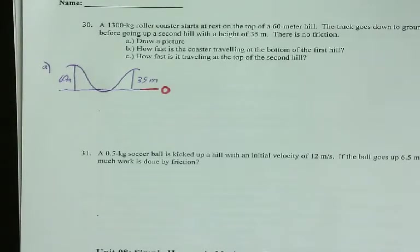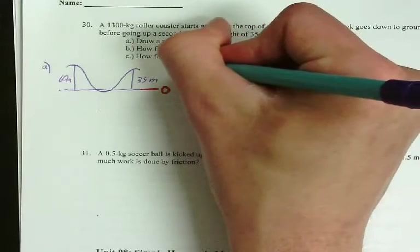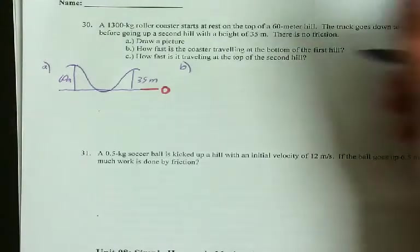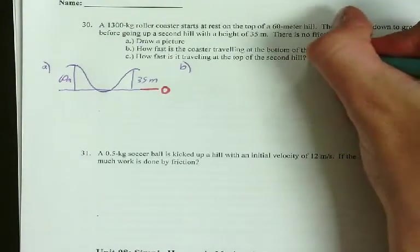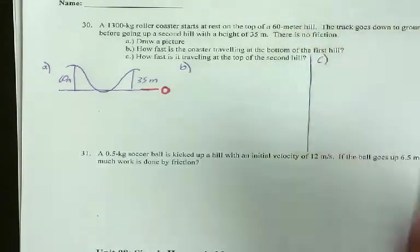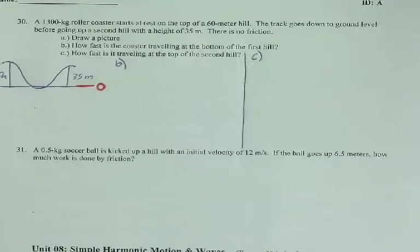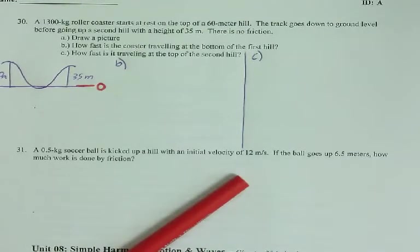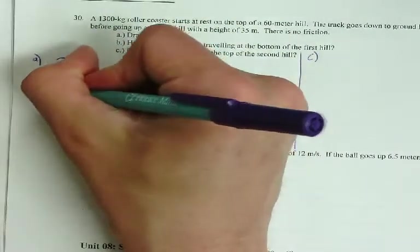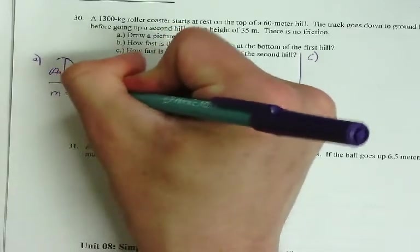So now we're ready for B. How fast is the coaster going at the bottom of the first hill? And then C, how fast is it going at the top of the second hill? Let's do B here, and then I'll do C over here. So I need to decide what type of problem this is. Let's do knowns and unknowns first.